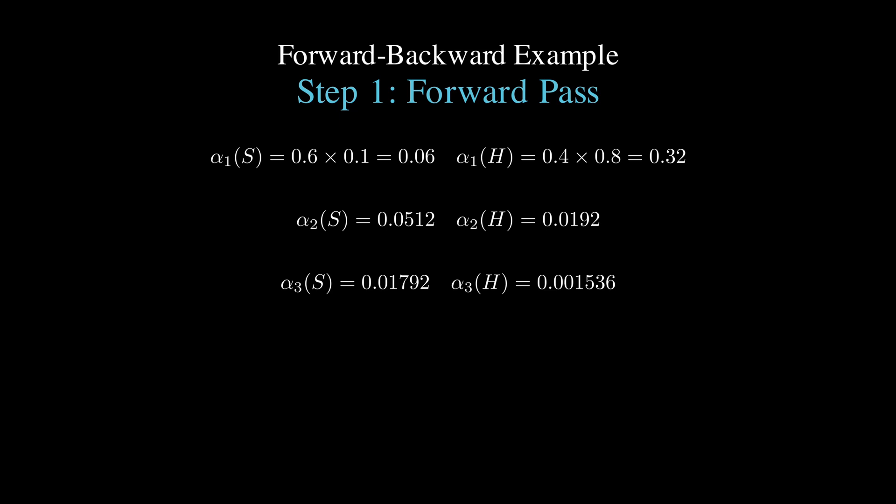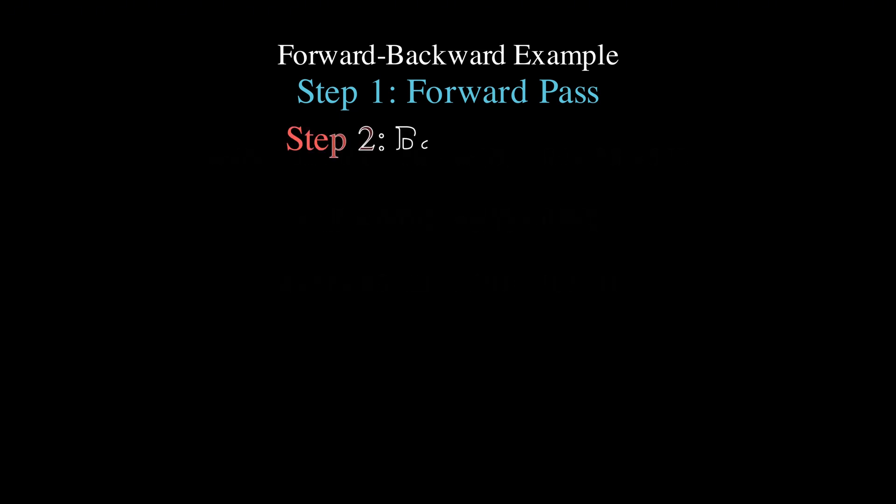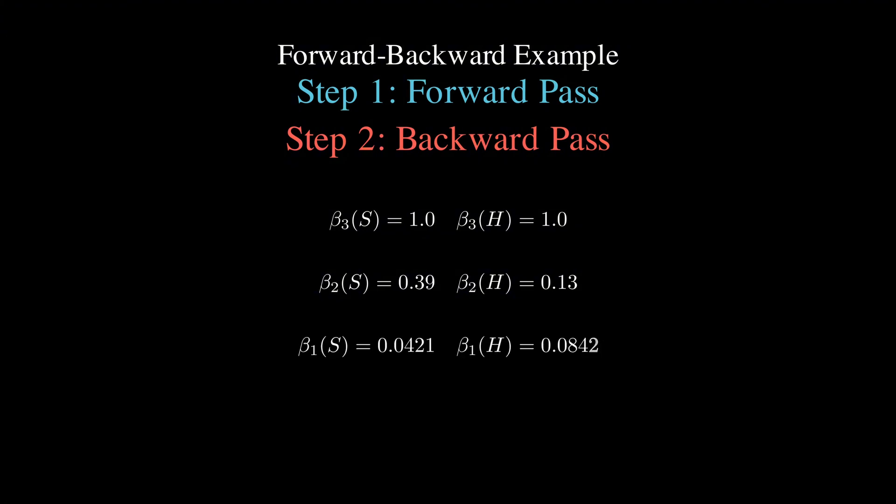For the backward pass, we start at day 3 with beta 3 of sad and beta 3 of happy, both equal to 1. Then working backwards to day 2, we compute beta 2 of sad, as a sad to sad times b sad of blue, times beta 3 of sad, plus a sad to happy times b happy of blue, times beta 3 of happy, and similarly for the other calculations.